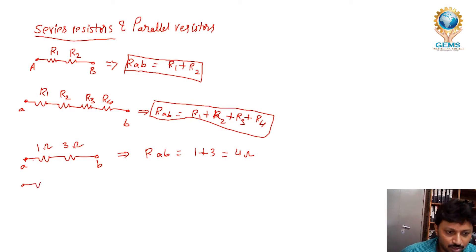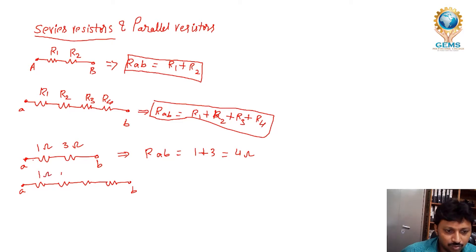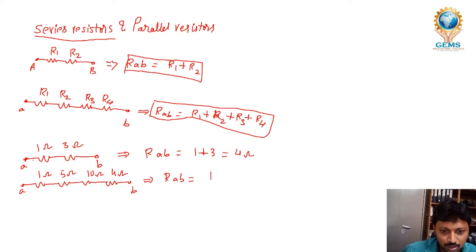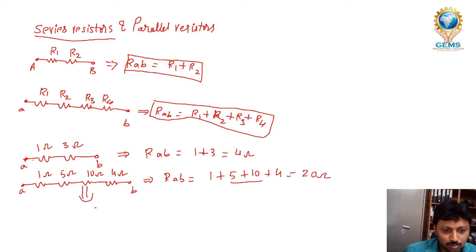Suppose I have 4 resistors in parallel — this is A, this is B — with values 1Ω, 5Ω, 10Ω, and 4Ω, giving a total of 20. So RAB is equal to 1 plus 5 plus 10 plus 4, which gives 20Ω. The total resistance is 20Ω.